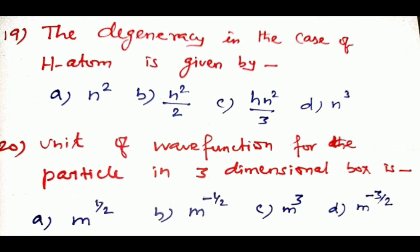The answer for question nineteen is n², which is the correct answer. Question number twenty: the unit of wave function for a particle in a three-dimensional box is dash.